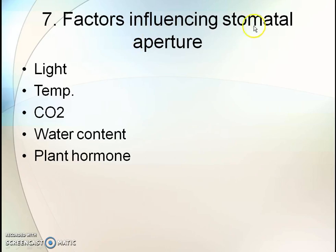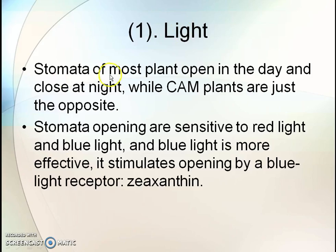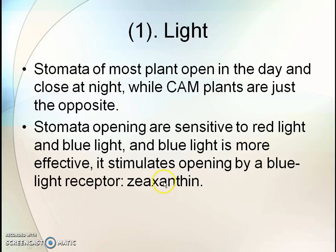Factors influencing stomatal apertures include light, temperature, carbon dioxide, water content, and plant hormones. Regarding light: stomata in most plants open during the day and close at night, while crassulacean acid metabolism plants are the opposite. Stomatal openings are sensitive to red light and blue light, and blue light is more effective, stimulating opening through the blue light receptor zeaxanthin.